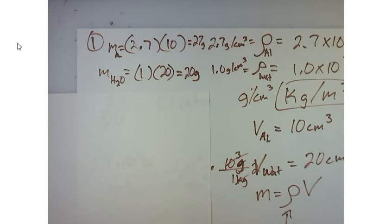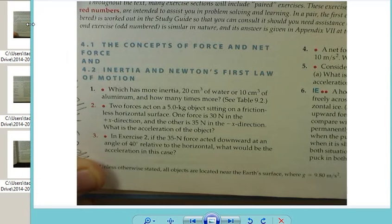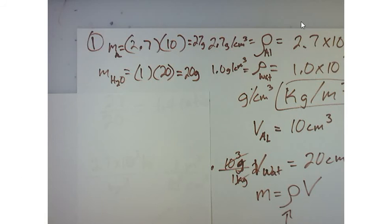So the question that they asked us originally was, which has more inertia, the water or the aluminum? And if so, how many times more? Whenever you hear the phrase 'how many times more,' it's a ratio. So if I take 27 grams over 20 grams, that's a ratio of 1.4.